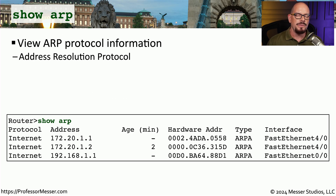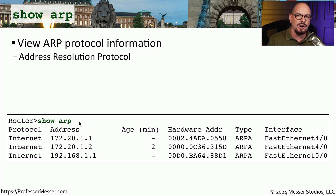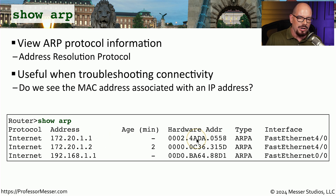In an earlier video, we talked about viewing the ARP cache inside of the operating system. But there's also a way to view the ARP cache inside of switches and routers using the show ARP command. This views the address resolution protocol cache loaded inside of that device, and it's very similar to the ARP cache inside of your operating system. So if you're trying to determine if a switch or router sees a particular MAC address associated with an IP address, you can view all of that inside of your ARP table — the protocol, the IP address, the hardware or MAC address, and the interface used to identify that particular pair.